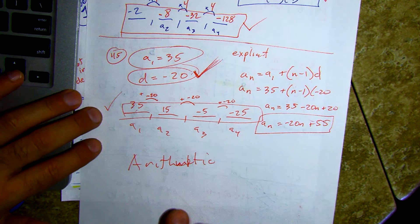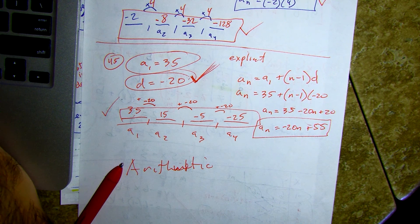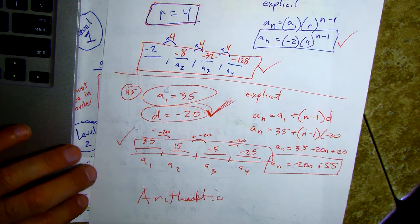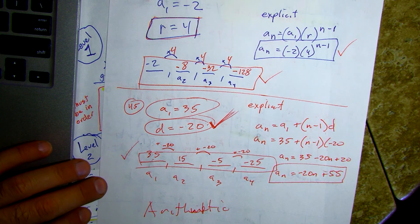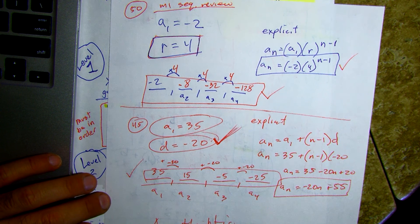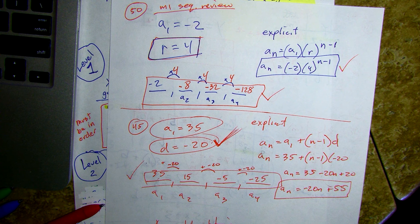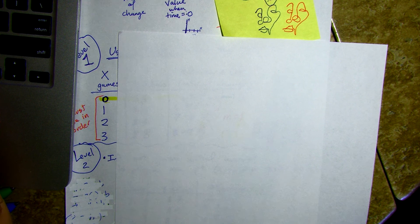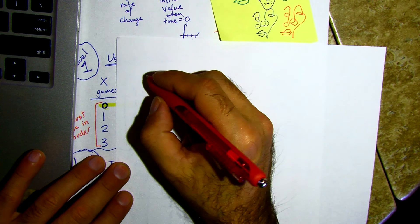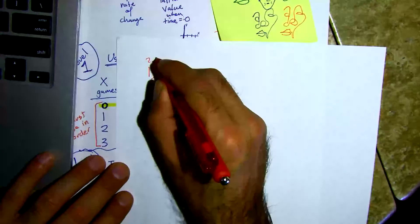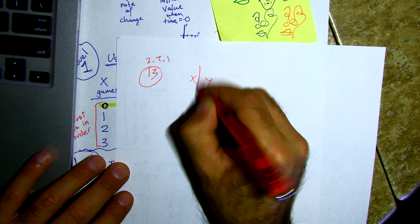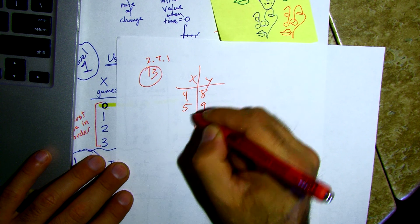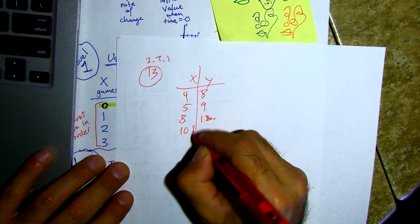Screenshot in three, two, one. I'm going to look at number thirteen on worksheet 271 — that was the next one in the chat. x, y: four, eight; five, nine; eight, twelve; ten, fourteen. They're in order but we're missing some. I'm going to look at four and five because those are sequential.